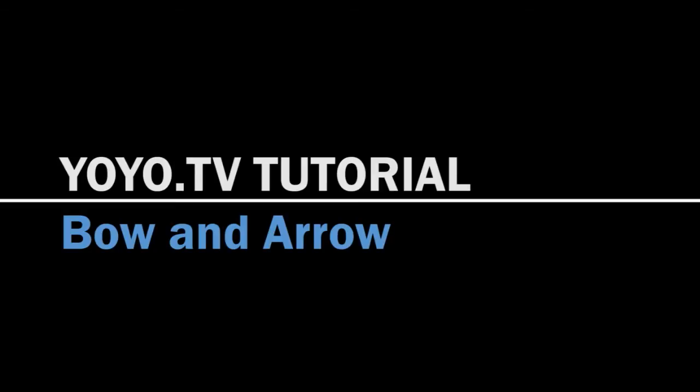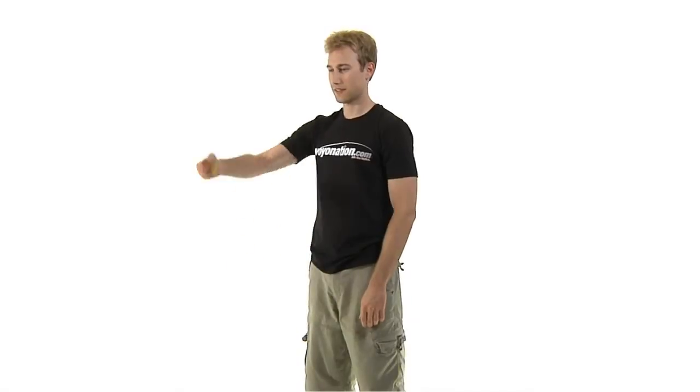Bow and Arrow, also known as Robin Hood, is a novice trick that uses a responsive yoyo. It's basically a different way of getting the yoyo back to your hand.